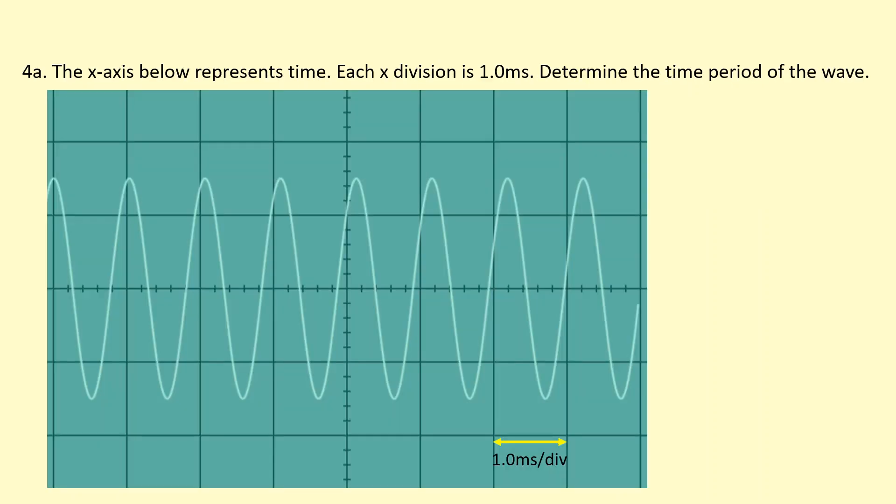This image shows the screen of an oscilloscope with a waveform on it, and the x-axis represents the time. And each division on the x-axis represents one millisecond. Determine the time period of the wave. So that's basically how long one wave takes.